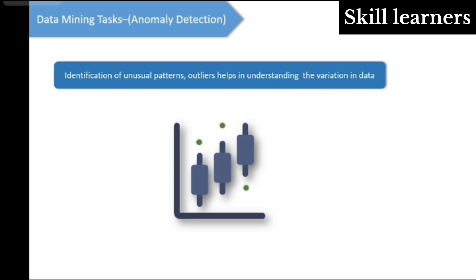Whenever we have data, there could be a lot of chances where we have incorrect data or missing data. If you have a tabular column, there could be scenarios where the names of the columns are wrong or maybe different data has been listed under different columns. For example, the names are listed under the age column and the age is listed under the name column. This is where you would have to take the help of anomaly detection.